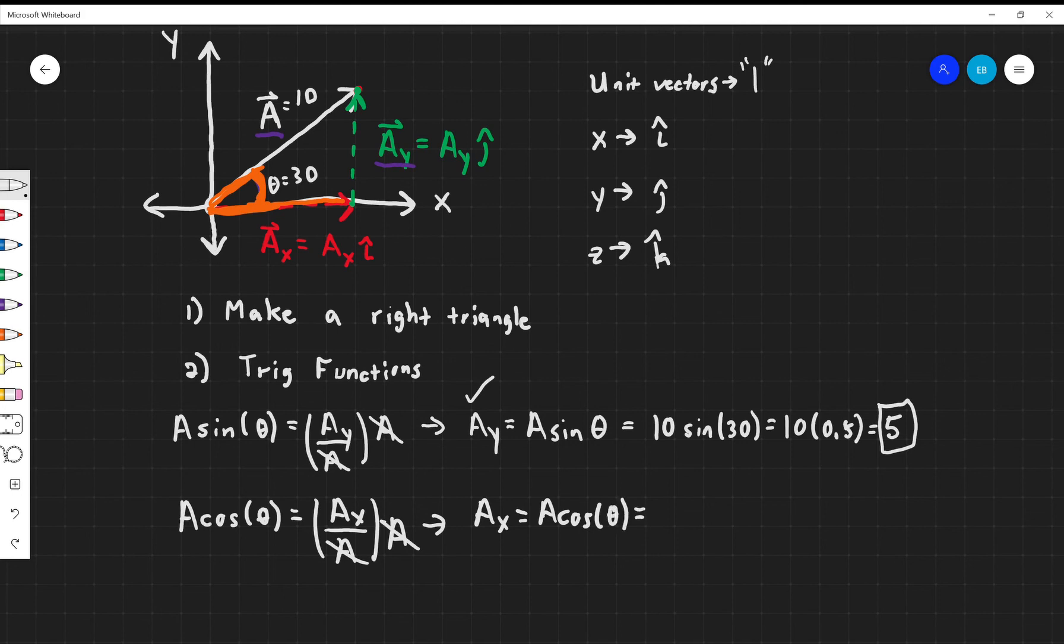Plug in your numbers. Do this in your calculator. 10 times cosine of 30 is equal to 10 times 0.5.